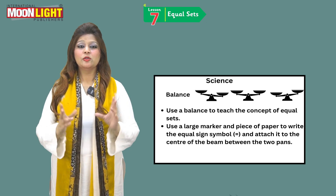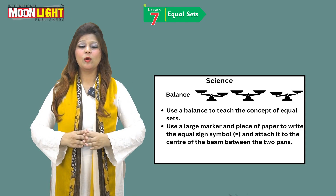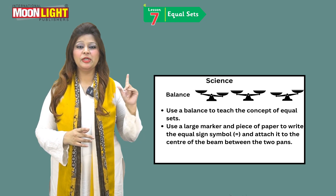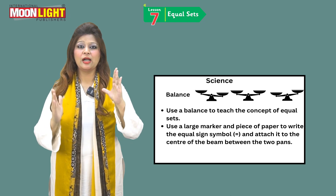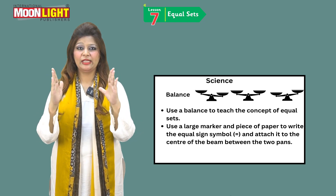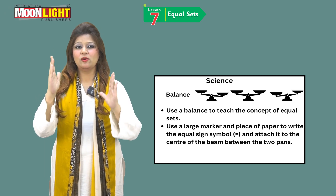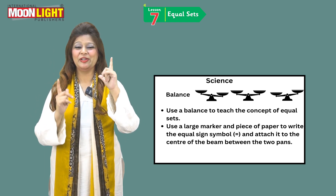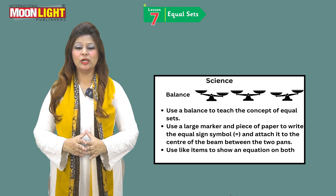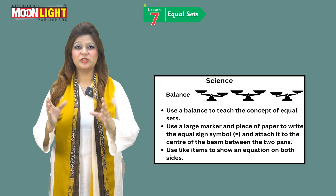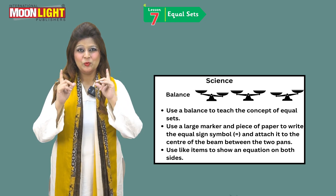These two are pans. You are going to place this symbol over here like this. The picture is showing you equal — when both pans are equal they must look like this. If not equal, then it must be like this or like this. Use like items to show equal on both sides, so the objects must have the same numbers as well as the same weight.